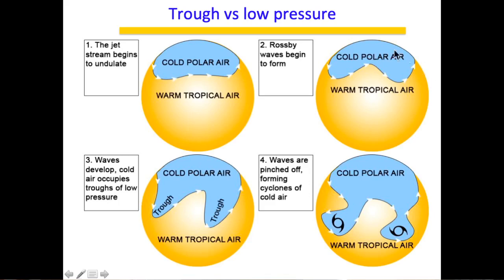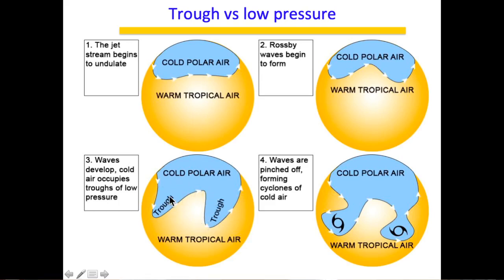The basic difference between a trough and a low pressure is that as air starts undulating, you get wave-like patterns. These waves dip down and move up. The dipping-down pattern is called a trough, and the moving-up pattern is called a ridge. A trough is inherently a cyclonic system with anti-clockwise motion, whereas a ridge is anti-cyclonic with clockwise motion of winds.